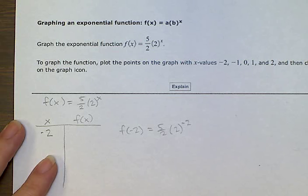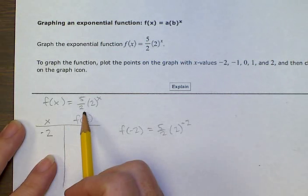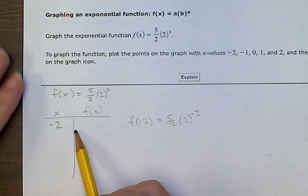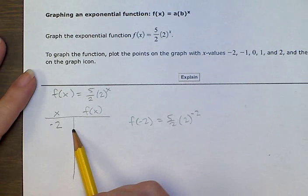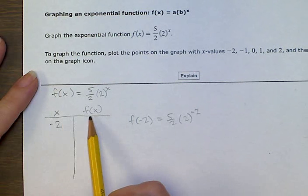To graph the function, plot the points on the graph with x values -2, -1, 0, 1, and 2. We're going to start by making a chart with x — what we put in — and f(x) — what we get out.